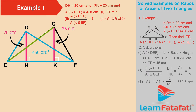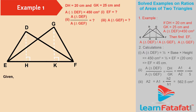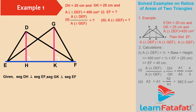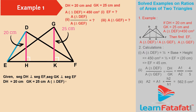Find the Area of Triangle GEF. Solution: Given — Segment DH is perpendicular to segment EF, segment GK is perpendicular to segment EF. DH is equal to 20 cm, GK is equal to 25 cm, and the Area of Triangle DEF is equal to 450 cm².